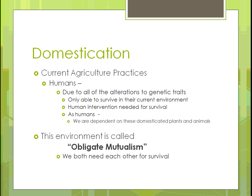Domestication, in the context of agricultural practices, is due to all the alterations in genetic traits — specifically whether an organism can survive in its environment. What we've become is a situation where humans have to be there for these animals to survive. We're dependent on certain plants and animals, and without us they couldn't exist. This is called obligate mutualism — you need each other in order to survive.